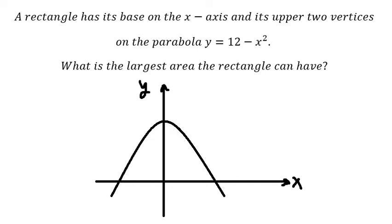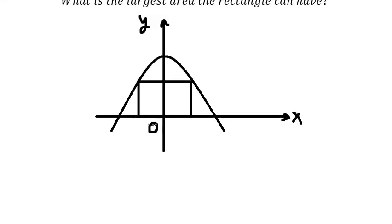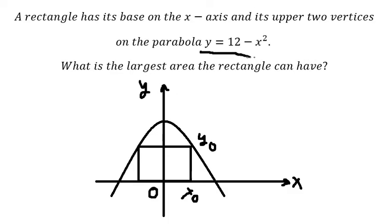We know that the rectangle should be like this. As you can see, if I choose the point x₀ in here, we can find the value y₀ on the function, because two vertices are on the parabola and the base is on the x-axis.